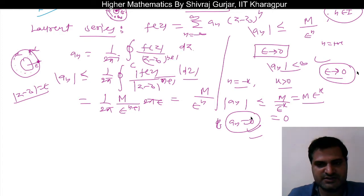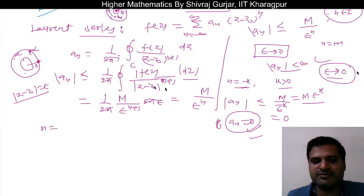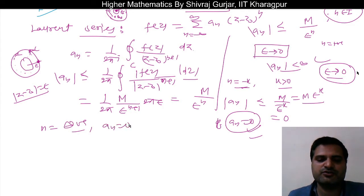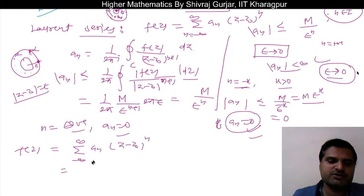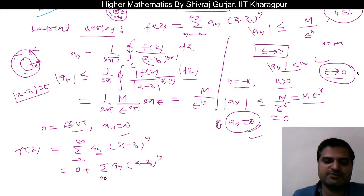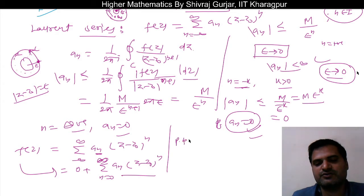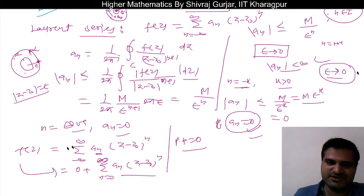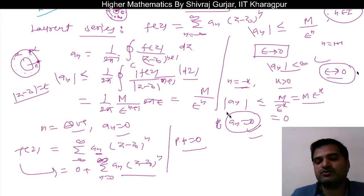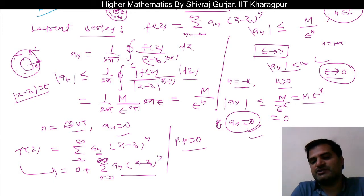So whenever n is negative, aₙ equals zero. This means the Laurent expansion f(z) = sum from minus infinity to infinity of aₙ (z - z-naught)^n has all negative-power terms equal to zero. This is nothing but a Taylor expansion — the principal part of the Laurent series is zero — and we know that if the principal part is zero then that point is a removable singularity. So z equals z-naught is a removable singularity.